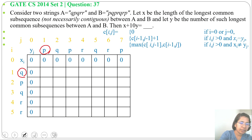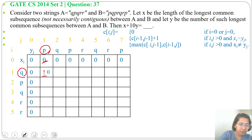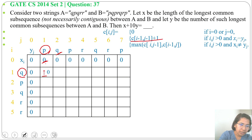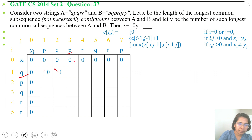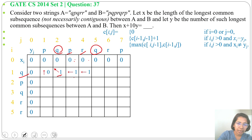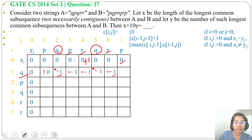Now compare Q with P — not a match, so we write 0, arrow points up. Next Q with Q — it's a match, so C[i-1][j-1]+1 = 0+1 = 1, arrow toward upper-left corner. Q with P — no match, max is 1, write 1, arrow left. Q with R — no match, 1 is greater, write 1, arrow left. Q with Q — match, 0+1 = 1, arrow upper-left. Q with R — no match, write 1, arrow left. Q with P — no match, max is 1, write 1, arrow left.